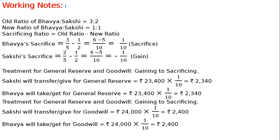The partners have decided to change their profit sharing ratio to 1:1 with immediate effect. For this purpose, they decided that investments are to be valued at Rs. 20,000 — so investment decreases from 30,000 to 20,000. Goodwill will be valued at 24,000. General reserve not to be distributed between the partners. You are required to pass necessary journal entries in the books of the firm.